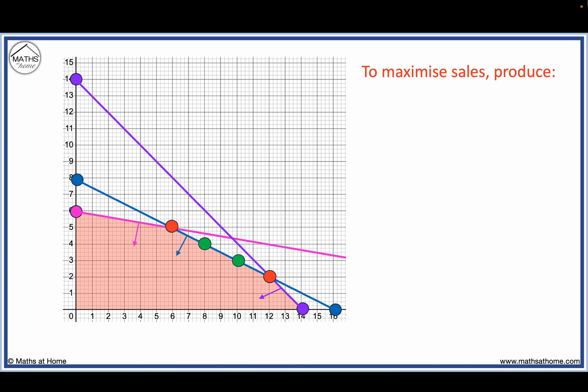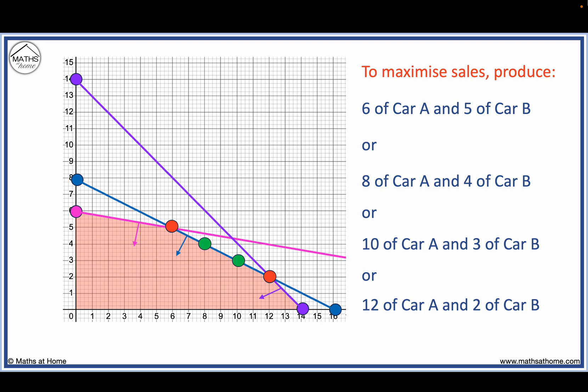To maximise sales, produce 6 of car A and 5 of car B, or 8 of car A and 4 of car B, or 10 of car A and 3 of car B, or 12 of car A and 2 of car B. These are from the coordinates listed on the graph.